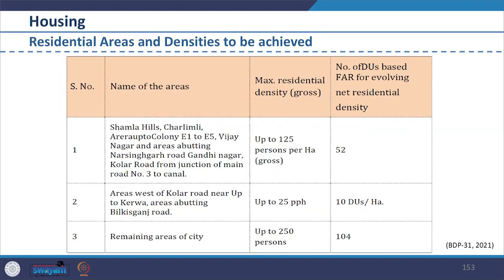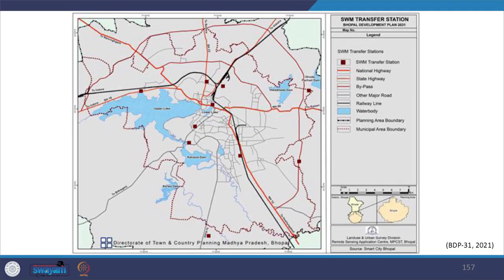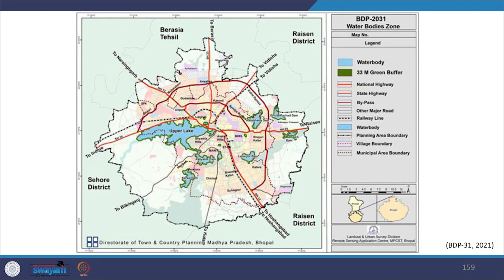As per URDPFI guidelines, an infrastructure and utility plan should be provided to indicate the layout of trunk infrastructure of each utility at the scale of the proposed land use plan. In the Bhopal Development Plan, a detailed account of housing provision is given. Water supply, sanitation, and sewerage detail proposals have been prepared, as well as proposals for solid waste management. Eco-tourism management planning has also been prepared. In the development plan, an old city and heritage plan proposal is prepared, and special area planning including smart city interventions is also covered.